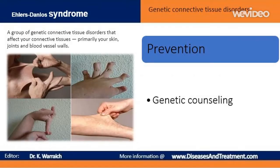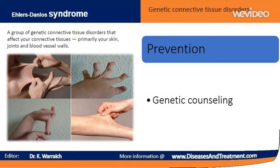If you have a personal or family history of Ehlers-Danlos syndrome and you're thinking about starting a family, you may benefit from talking to a genetic counselor to assess the risk of inherited disorders. Genetic counseling can help you understand the inheritance pattern of the type of Ehlers-Danlos syndrome that affects you and the risks it poses for your children.